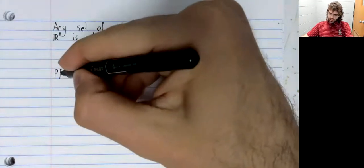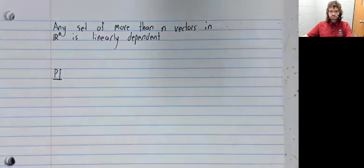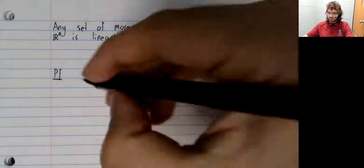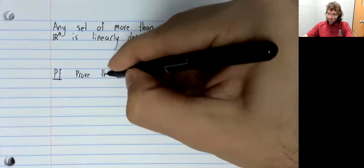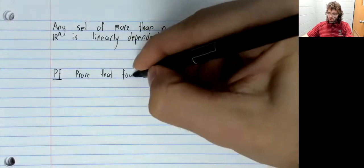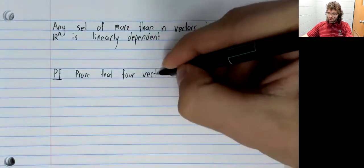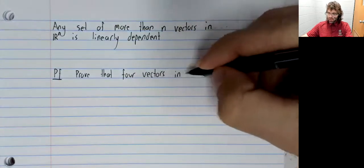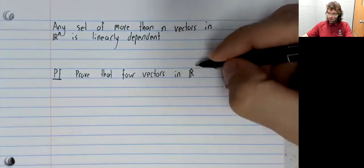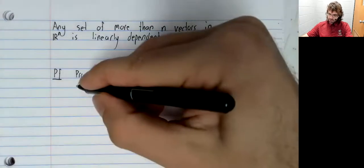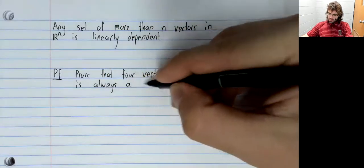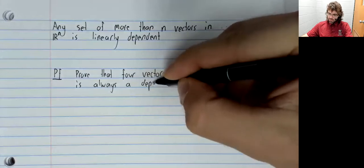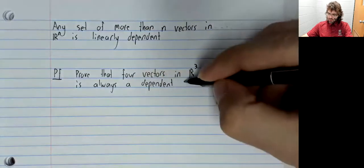Our proof of this, let's look at a special case, but any case is proved similarly. Let's prove that four vectors in R3 is always a dependent set.